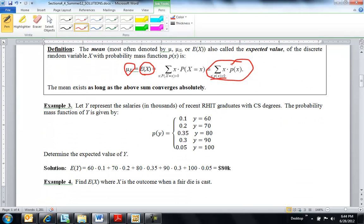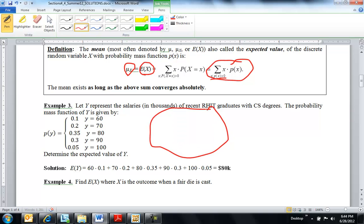Here's a quick example I made up. I can't say it's true. We are just finding the, here's the probability mass function for incomes of graduating Rose-Hulman students with CS degrees, and here's expected amount. And again, I made that up, so I don't know that that's true. So there's one example.